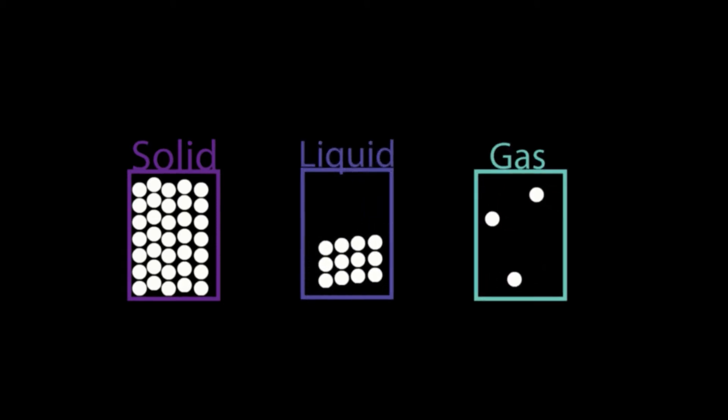Without air, we wouldn't be able to make a single noise. Sound travels through all forms of matter: solid, liquid, and gases. And the air is mostly made up of nitrogen at 78% and oxygen at 21%. But thank goodness for our atmosphere keeping in these gases and preventing them from floating into space.